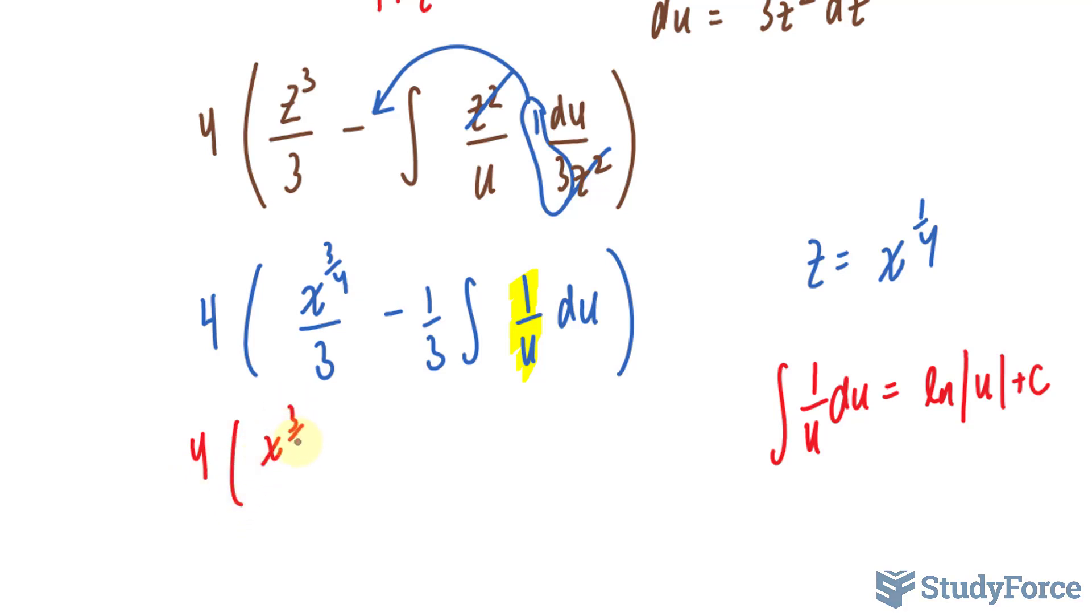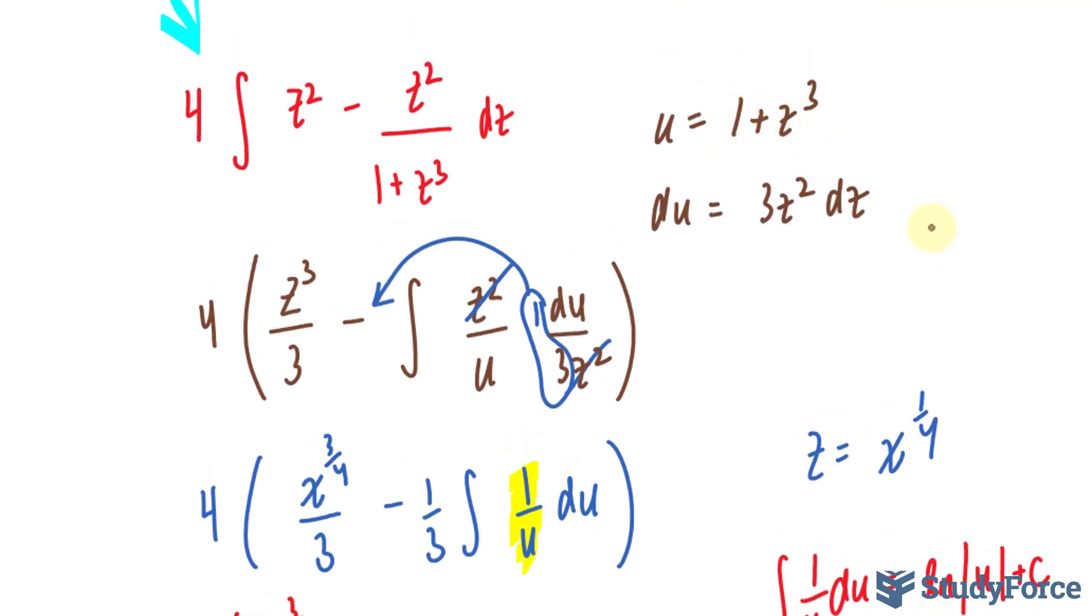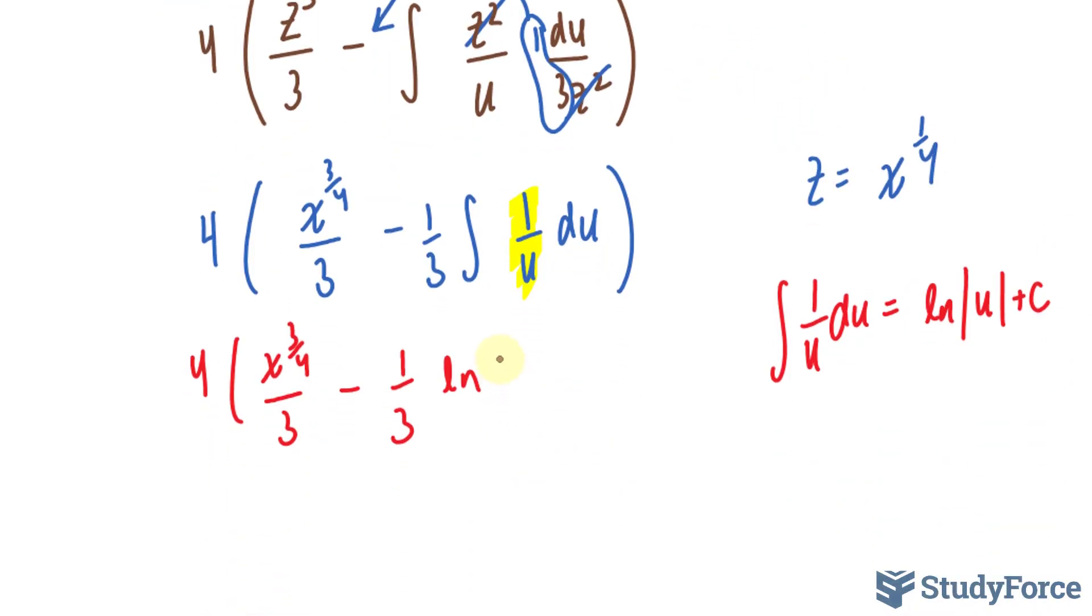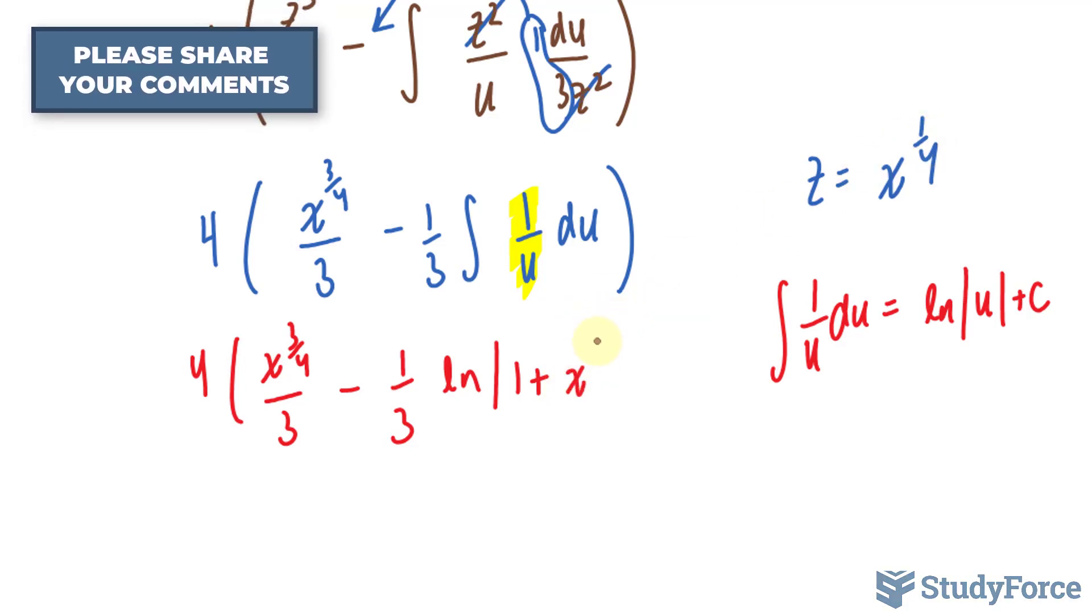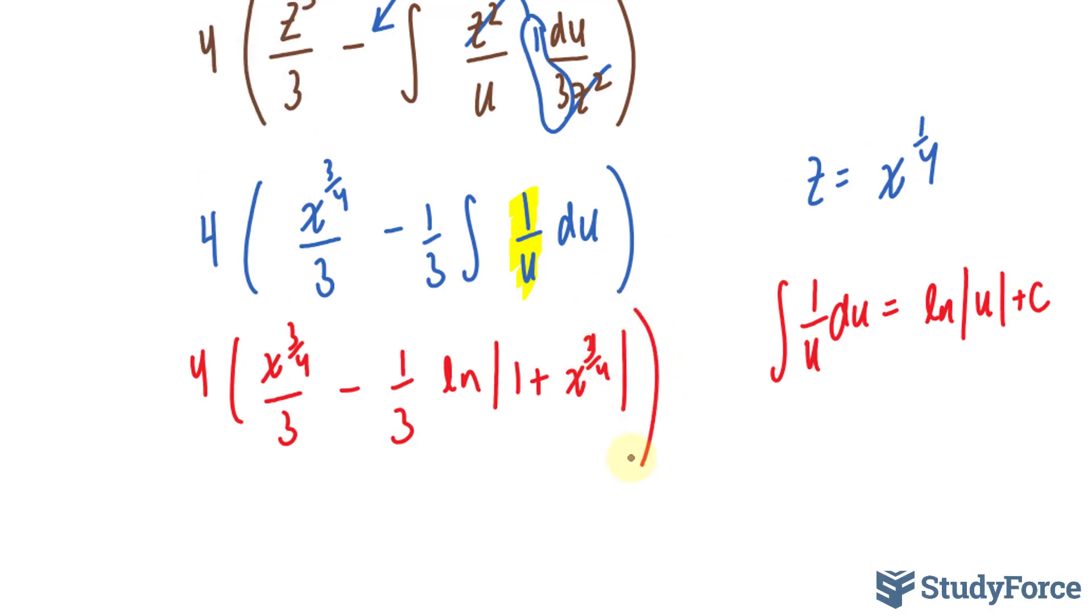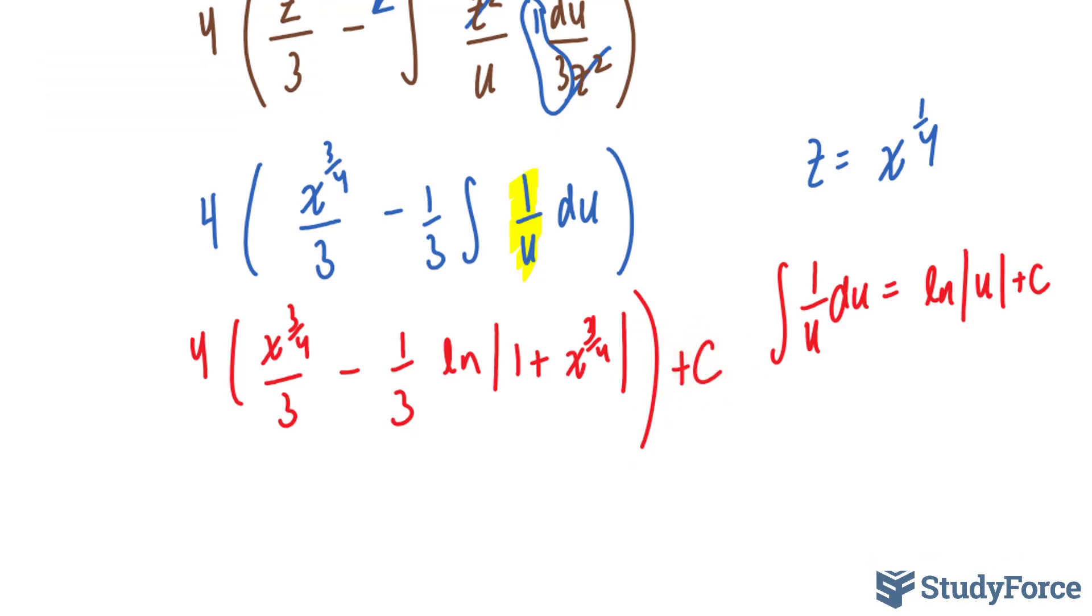So I'll use that rule where I have 4 times x to the power of 3 over 4 over 3 minus a third ln u, which was set to 1 plus z to the power of 3. 1 plus z to the power of 3. But instead of z to the power of 3, I'll replace it with x to the power of a quarter times power of 3 is 3 over 4. And don't forget your arbitrary constant c. So what you can do from here is multiply this 4 into these two terms and you are done.